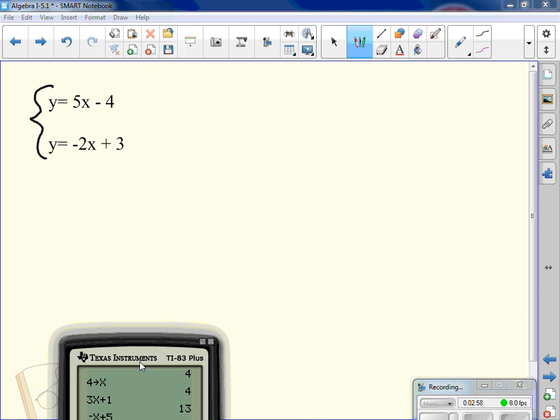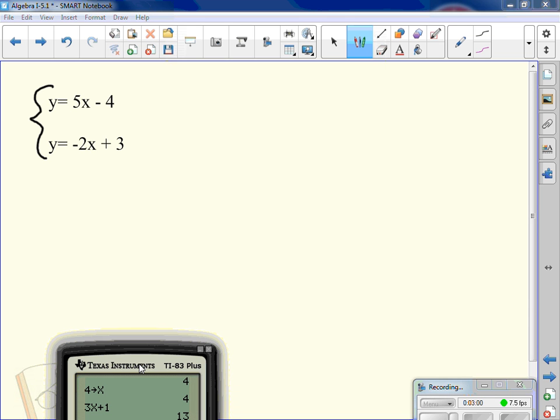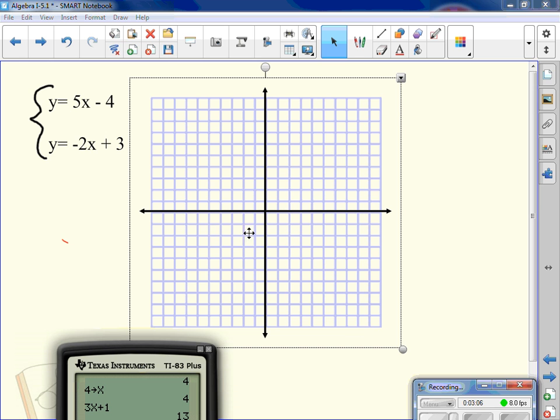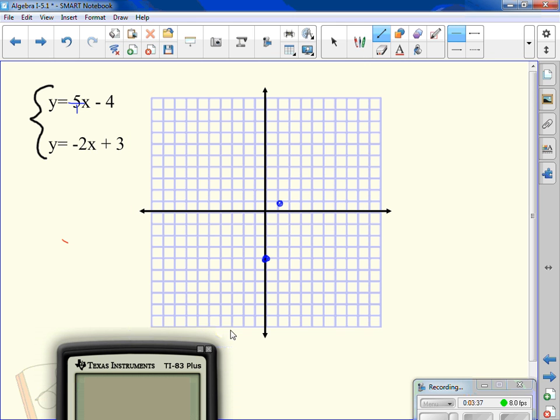What I want you to do now is in another quadrant, graph both of these equations. How do I graph the first line? I start down 4: 1, 2, 3, 4. How do I move from here? Up 5. Which way is over? To the right one. 1, 2, 3, 4, 5. Over 1. Because this is 5 over 1 is my slope.